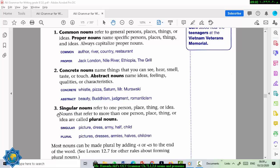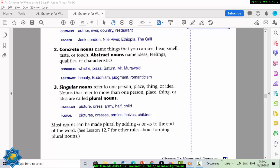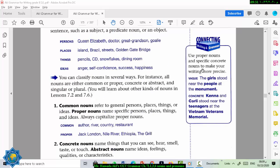Other types of nouns can be singular or plural. Singular nouns, they refer to one person, or one place, one thing, one idea. But nouns that refer to more than one, we call them plural. For example, picture is one, singular. Pictures is plural. Dress is a singular noun. Dresses are plural nouns. Most nouns can be made plural by adding S or ES to the end of the words. And make sure that you are able to read the notes on the margin here.